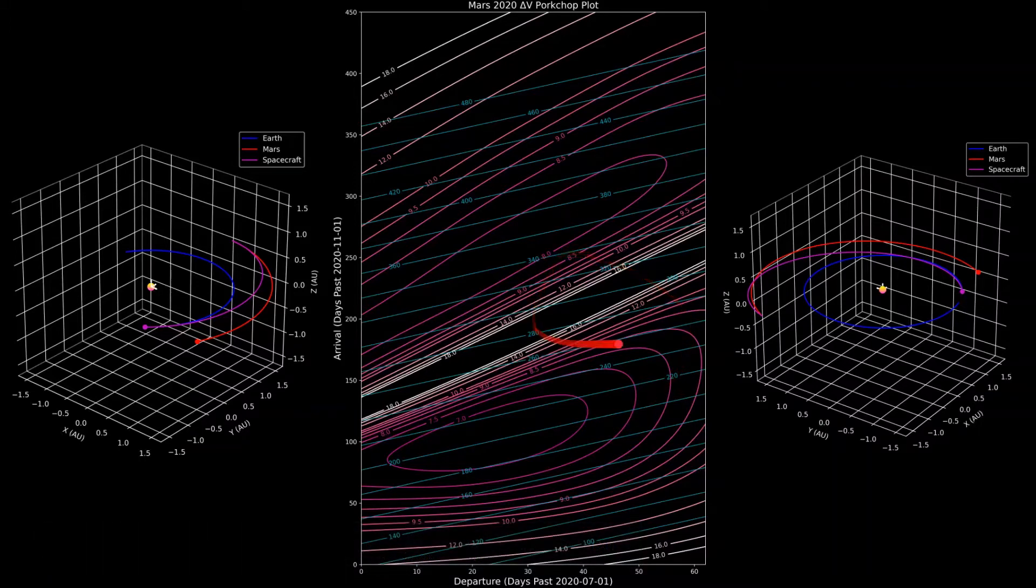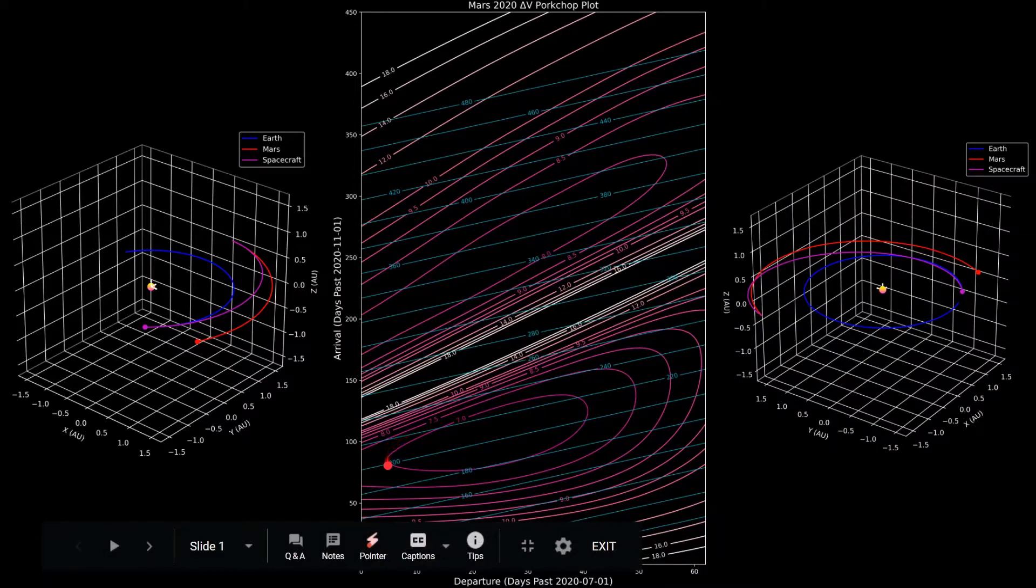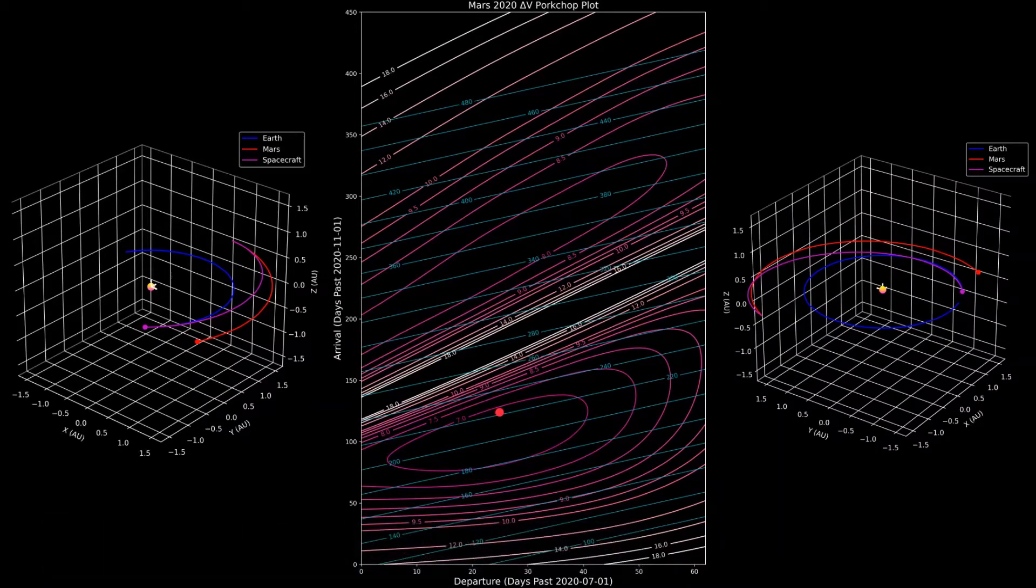The rest of the lines are contours with equal delta V for Earth to Mars trajectories. So for example, this contour right here that's labeled 7.0, anywhere along that contour represents a trajectory from Earth to Mars that will have 7 kilometers per second of delta V.